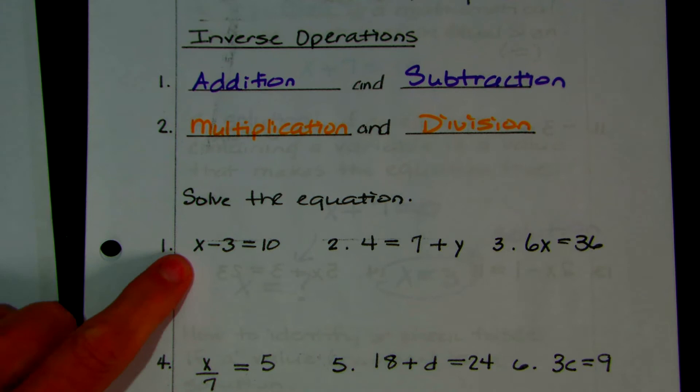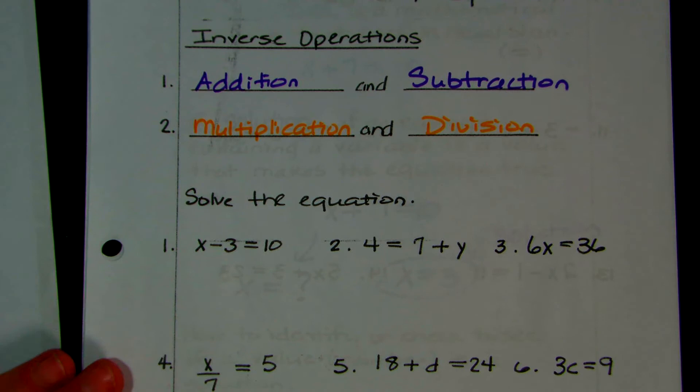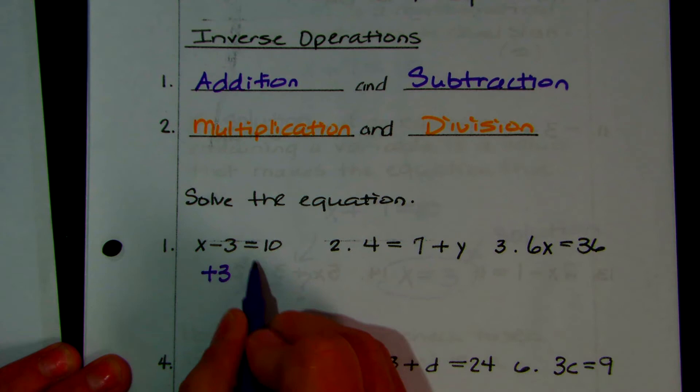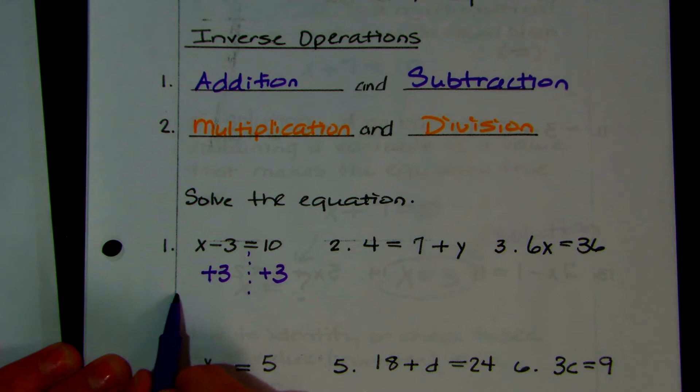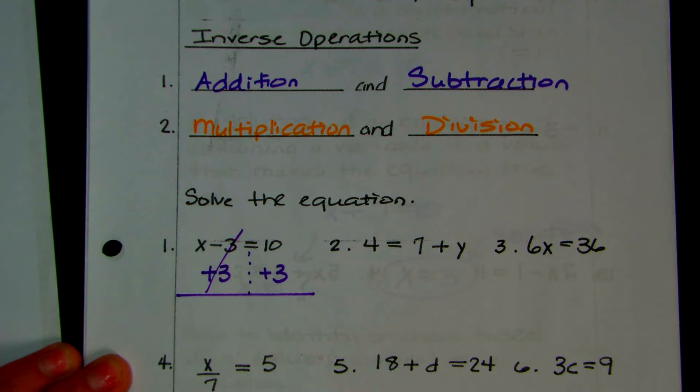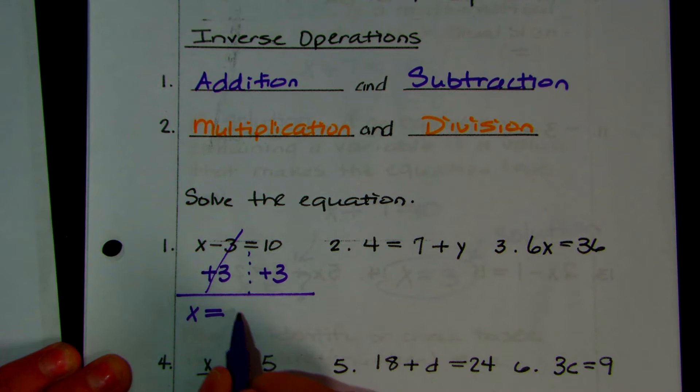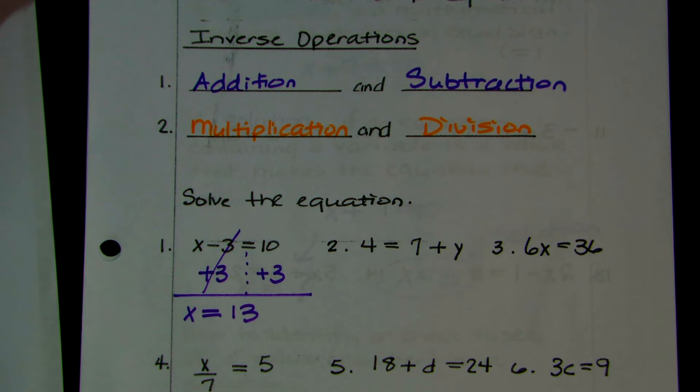We're going to talk about how to use inverse operations to legally move something from one side of the equation to the other. So if you have x minus 3 equals 10, that is a minus 3. To legally move it to the other side, we would add 3 to this side. The equal sign splits the sides, so you add it to the other side too. Negative 3 plus 3 would cancel, and x would be equal to 10 plus 3, which would be 13.